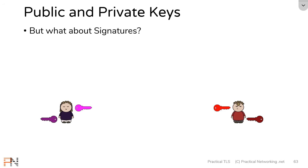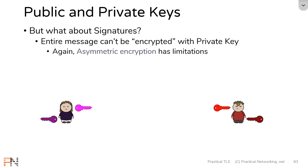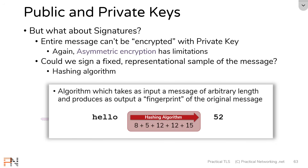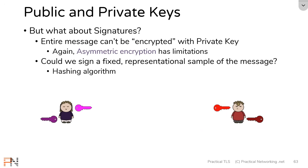What about signatures? We talked about using signatures to attain integrity and authentication by encrypting something with your own private key. But asymmetric encryption has limitations — you can't simply encrypt an entire message with a private key. Instead, what we'd like to do is encrypt a smaller, fixed representational sample of that message. We do have a way to do this: hashing algorithms, which take a message of any size and produce a smaller fixed-width fingerprint of the original message. Signing uses hashing algorithms to simplify the process.